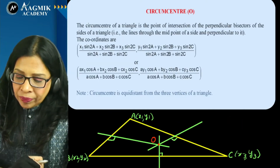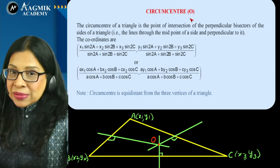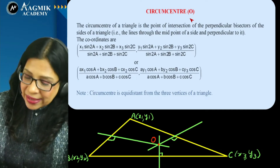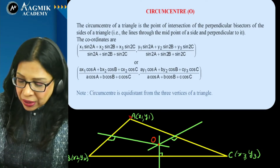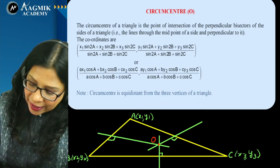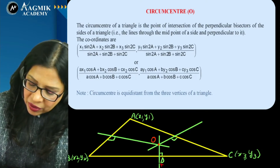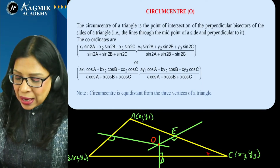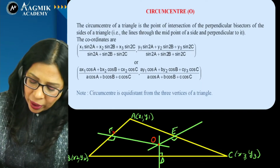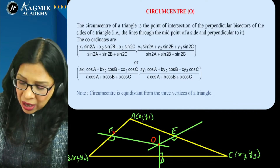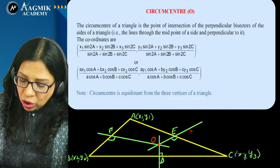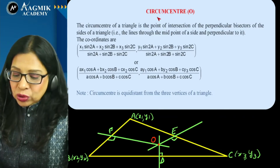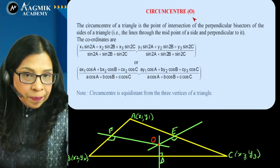Now the circumcenter. Perpendicular bisectors of the sides of a triangle meet at the circumcenter O. The circumcenter can be found using the formula involving sin 2A, sin 2B, sin 2C, or more practically by assuming coordinates (h, k) and using the condition OA = OB = OC.